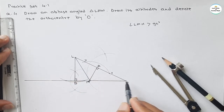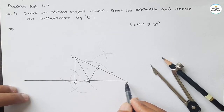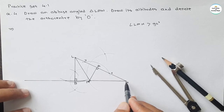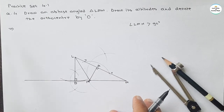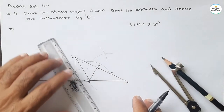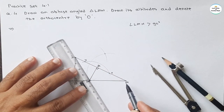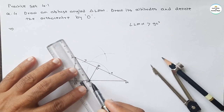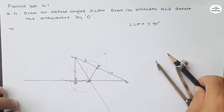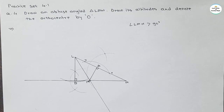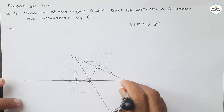Similarly, we will draw the altitude from point N to the opposite side LM. Here also we need to extend line LM because the altitude will come outside somewhere here. Extend this line, then take the compass with sufficient radius and cut the opposite side in two distinct points.